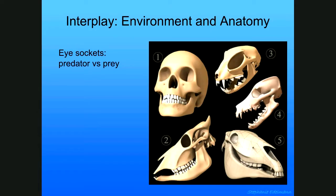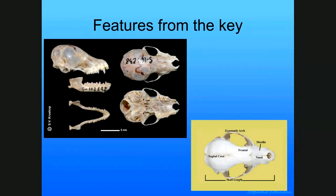As I said, animals that look forward — like us and predators — have forward-facing eyes. Prey animals tend to have sideways eyes because they need to scan the environment to make sure nobody is going after them.